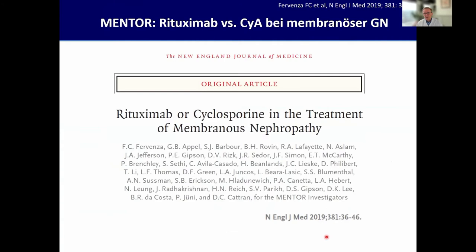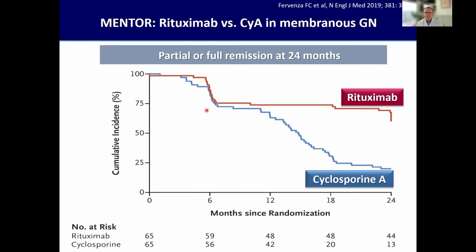The choice of rituximab versus CNI was tested in the MENTOR trial. Rituximab was given — and this is important — you need two infusions of one gram, because you lose a significant amount of rituximab in nephrotic syndrome. The outcome was fairly obvious: partial or full remission at 24 months was similar until one year, and then the curves separated hugely, with almost nobody in the cyclosporine group being in full or partial remission at two years. The bad thing is the trial design required end of therapy after one year — and if you stop cyclosporine, it disappears from the body within three days, and you get a relapse.